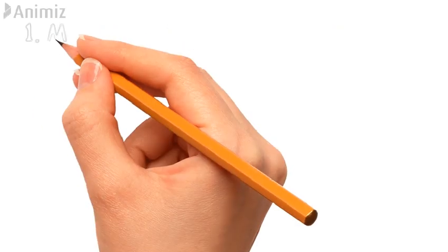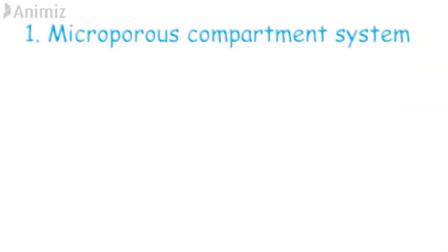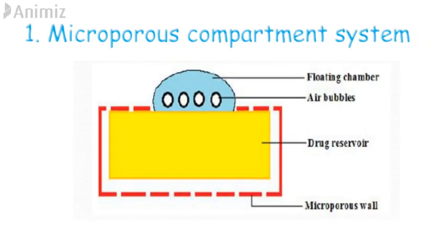The first type of effervescent system is the microporous compartment system. In this, the drug reservoir is encapsulated in a microporous compartment having pores along its top and bottom surface. The peripheral wall of the drug reservoir compartment is completely sealed to prevent any physical contact of undissolved drug with the stomach wall. Entrapped air in the flotation chamber causes the system to float in the gastric fluid.